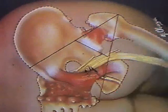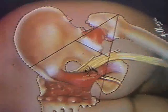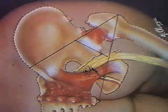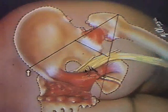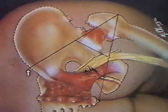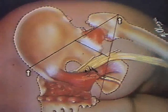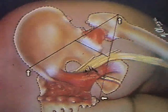The posterior approach to the sciatic nerve is performed using classic landmarks: the posterior and superior iliac spine, greater trochanter, the coccyx, and the femur.